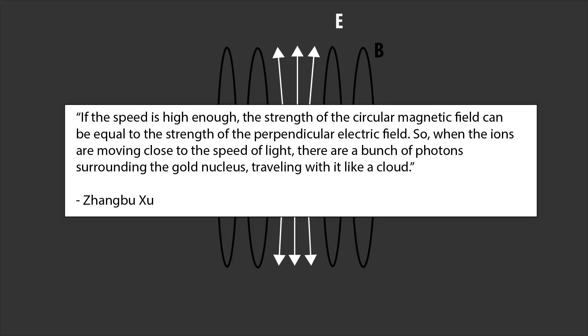As one scientist said, if the speed is high enough, the strength of the circular magnetic field can be equal to the strength of the perpendicular electric field. This is what a photon is. So, when the ions are moving close to the speed of light, there are a bunch of photons surrounding the gold nucleus, traveling with it like a cloud.